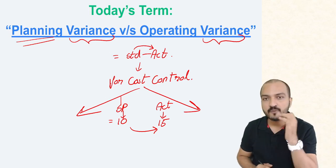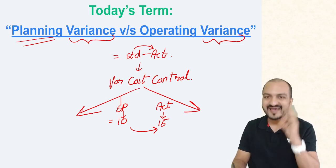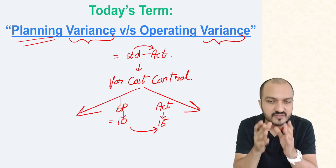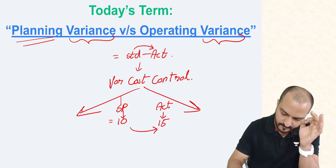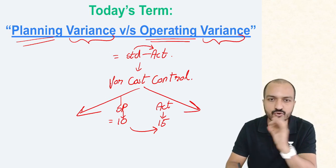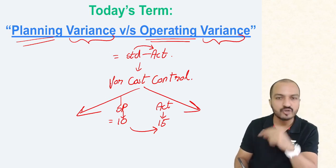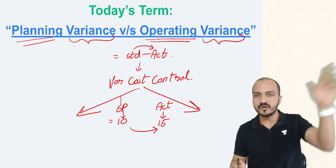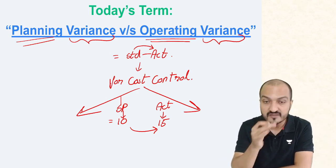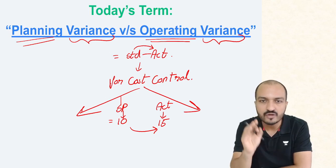Who is at fault? The purchase manager — the operating staff of the company. Normally, whenever extra cost is incurred, this extra cost is blamed on the operating staff. Operating staff means the employees who handle routine day-to-day operations. Extra price paid is blamed on the purchase manager; extra quantity consumed is blamed on the production manager. Any such extra cost incurred is blamed on the operating staff.